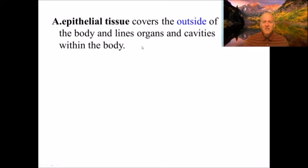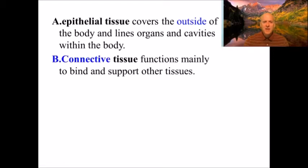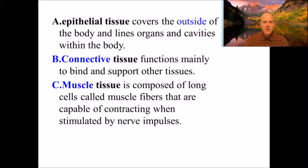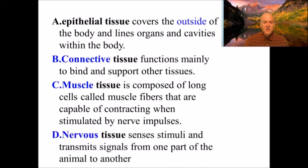Epithelial tissues cover the outside of the body and line organs and cavities within the body — a protective layer like your skin. Connective tissues bind the tissues together. Muscle tissue consists of long cells called muscle fibers capable of contracting when stimulated by nervous impulses, allowing for movement. Nervous tissue transmits signals from one part of the animal to another — in us it's from the brain, but many organisms don't have brains.